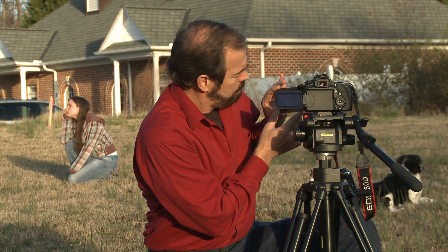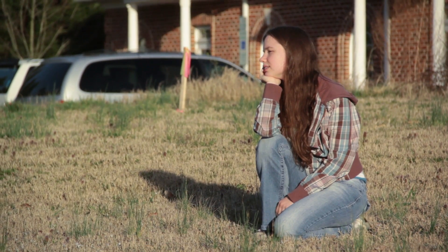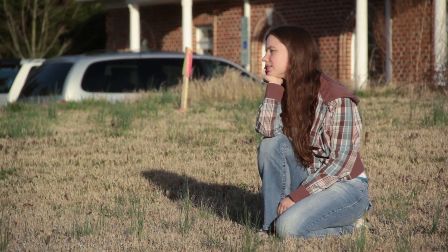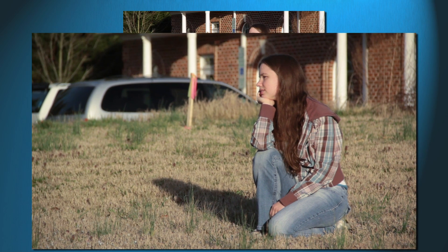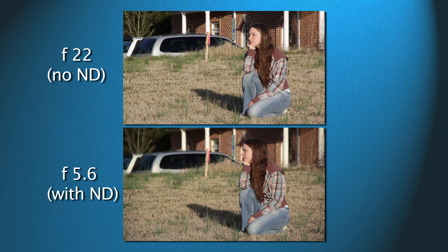Once I put my neutral density filter in front of the lens, I can change the f-stop and not overexpose the image. See how the background is now noticeably softer? The only difference between these two shots is that gray piece of glass in front of the lens.